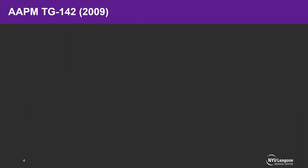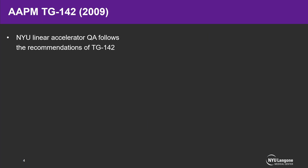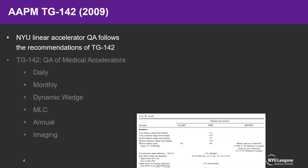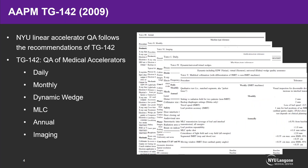I want to refresh everyone on AAPM TG142. The NYU Linear Accelerator Program follows the recommendations of TG142. The QA recommendations are spread over six different tables: daily, monthly, dynamic wedge, MLC, annual, and imaging. Each provides a procedure, tolerance, baseline, and frequency, and they are all dependent on whether you're treating with an SBRT or non-SBRT machine. Overall, there are 100 plus tasks over these six tables, so it's quite a bit to manage and keep on top of.